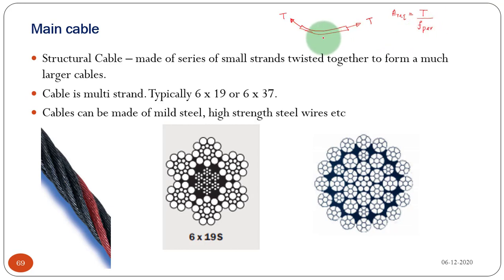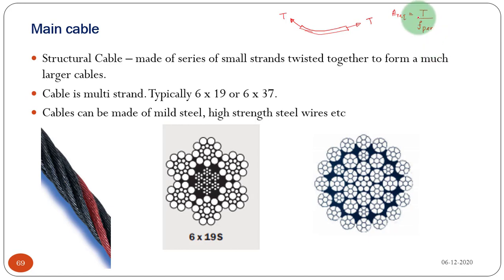These cables are not just like mild steel having strength around 250 MPa yield strength — we cannot use such steel. Usually the cable is made of high-strength steel. The typical ultimate tensile strength of that steel may be in the range of 1500 to 2000 MPa. So knowing the tensile force divided by the permissible stress gives us the required area. The tensile force is very large, and with 1500 to 2000 MPa permissible stress, the area also will be very large.